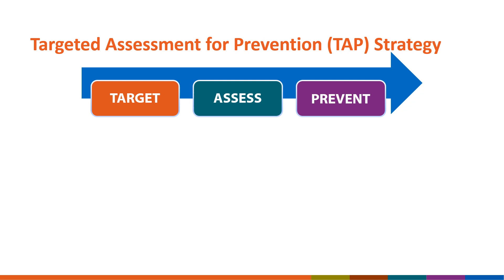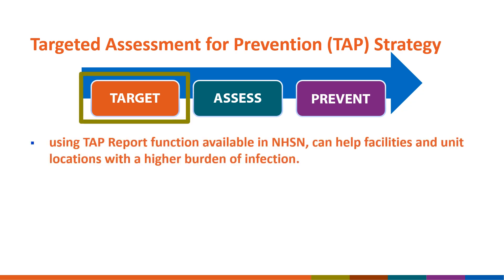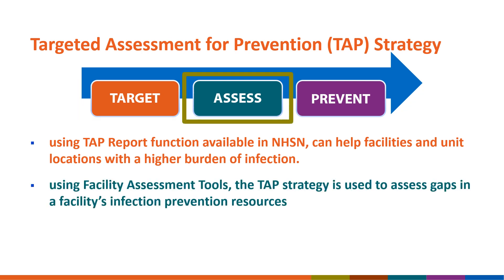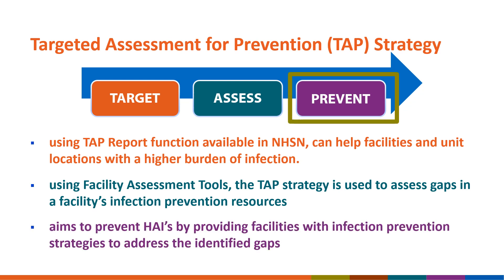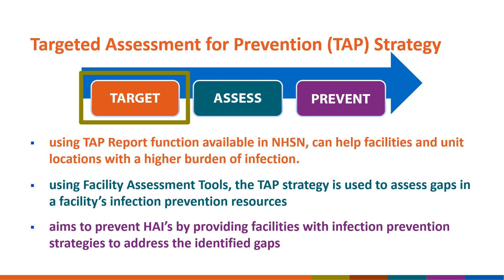The T in the TAP Strategy stands for Target. Using TAP report functions available in NHSN can help facilities identify unit locations with a higher burden of infection. Next is A, which stands for Assess. Using the facility assessment tools, the TAP Strategy is used to assess gaps in a facility's infection prevention resources. And lastly, the P stands for Prevent, which aims to prevent HAIs by providing facilities with infection prevention strategies to address the identified gaps. This Quick Learn will focus on the first step of the TAP Strategy: Targeting Facilities.